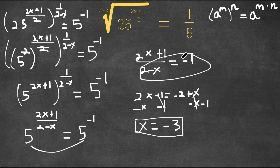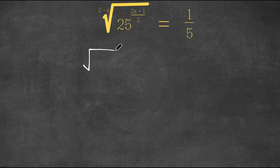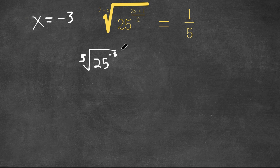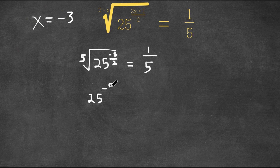Now I'm going to plug x in and check if it's right. We have the square root of 2 minus negative 3, which is simply 5. Remember, x is equal to negative 3. So we have the fifth root of 25 to the power of 2 times negative 3, which is negative 6, plus 1, giving negative 5 over 2, equals 1 fifth. This is the same as 25 to the power of negative 5 over 2, to the power of 1 fifth.